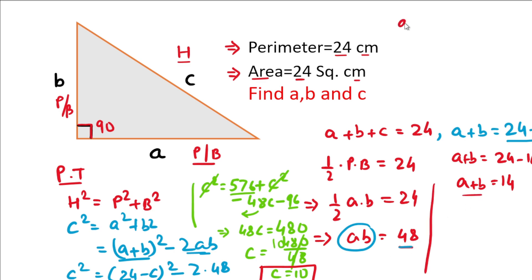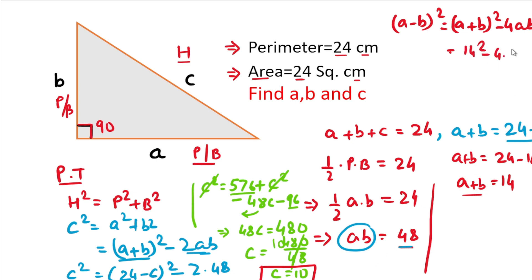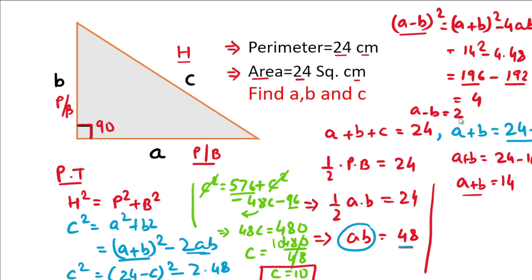To find a minus b, we use the formula: (a minus b) squared equals (a plus b) squared minus 4ab. That gives us 14 squared minus 4 times 48, which is 196 minus 192 equals 4. So a minus b equals square root of 4, which is 2.